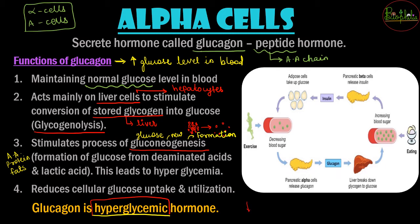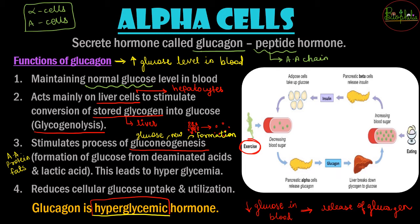Glucagon is released when blood glucose decreases — that signal is noticed by receptors and glucagon is released. This condition of decreased blood glucose can occur when a person is exercising, as exercise uses a lot of glucose. When pancreatic alpha cells release glucagon, it acts on the liver, glucose enters the bloodstream, blood sugar level rises, and the level is maintained.